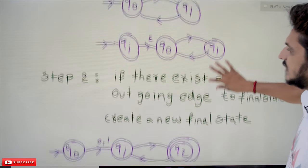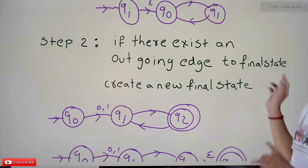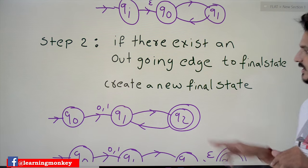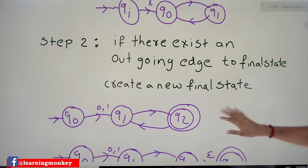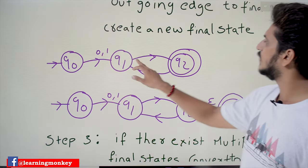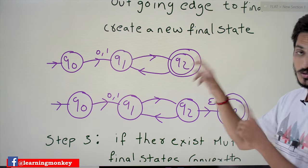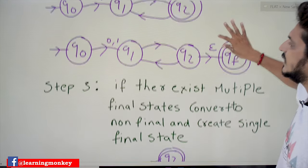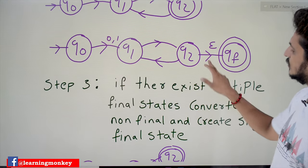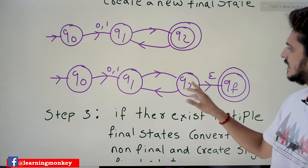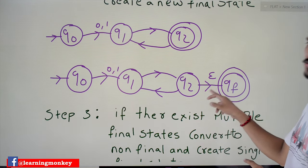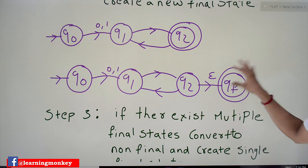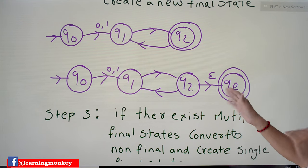Coming to the next step: if there exists an outgoing edge from the final state, create a new final state. For example, if Q2 is the final state and has an outgoing edge, we make Q2 a non-final state and add a new final state QF, moving from Q2 to QF using epsilon moves. Similarly, if there are multiple final states, convert them to non-final states and create a single new final state using epsilon moves.